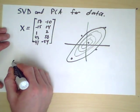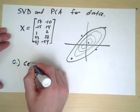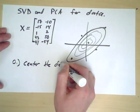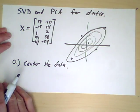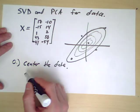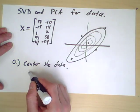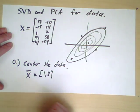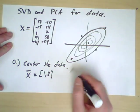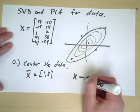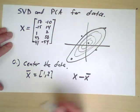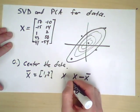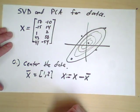Here's what we do. Step 0 is to center the data. In this case the average position of the data — the average data point — is in fact (1, 2). I'll leave it to you to check that. So what we're going to do is take x minus x-bar and make that the new x. So now the data is centered.